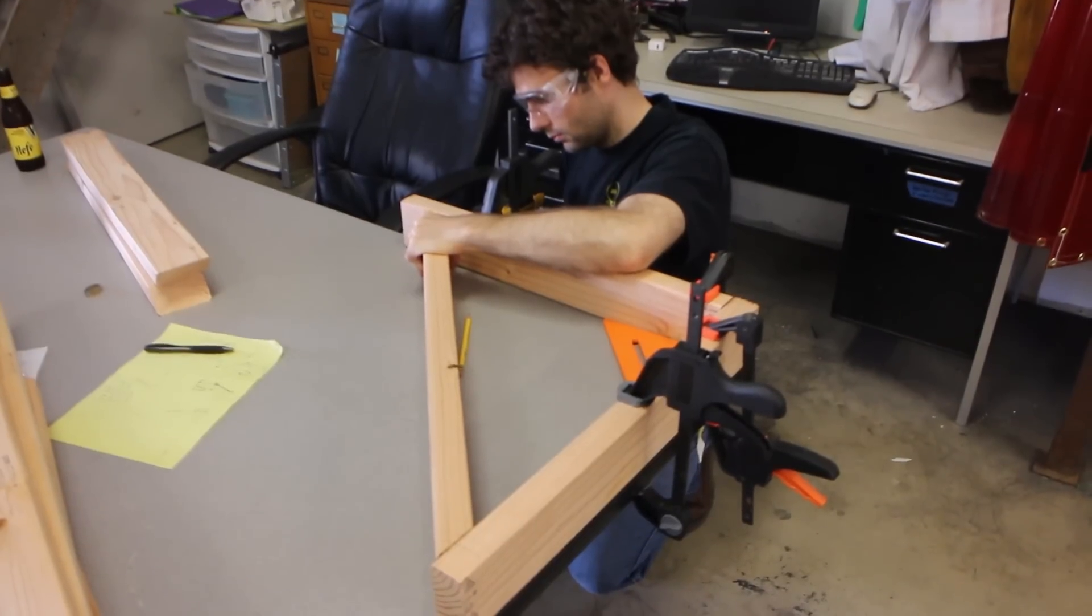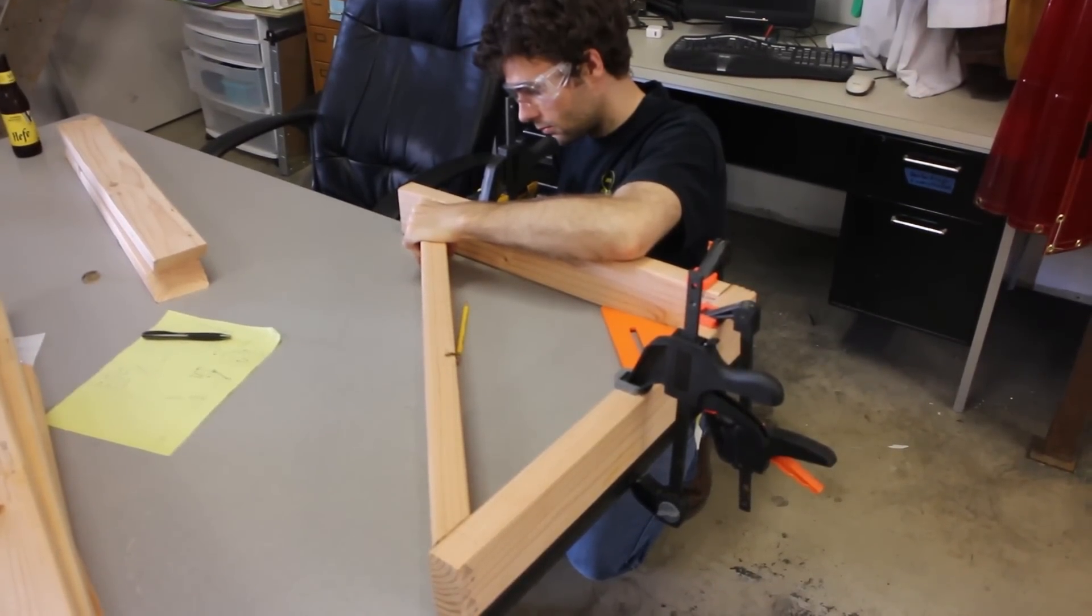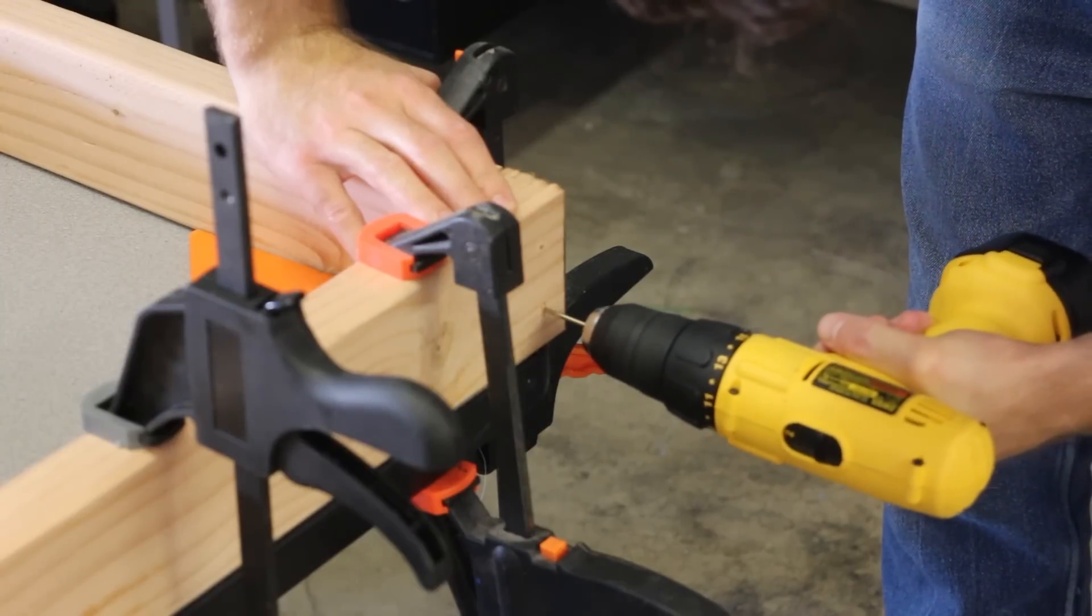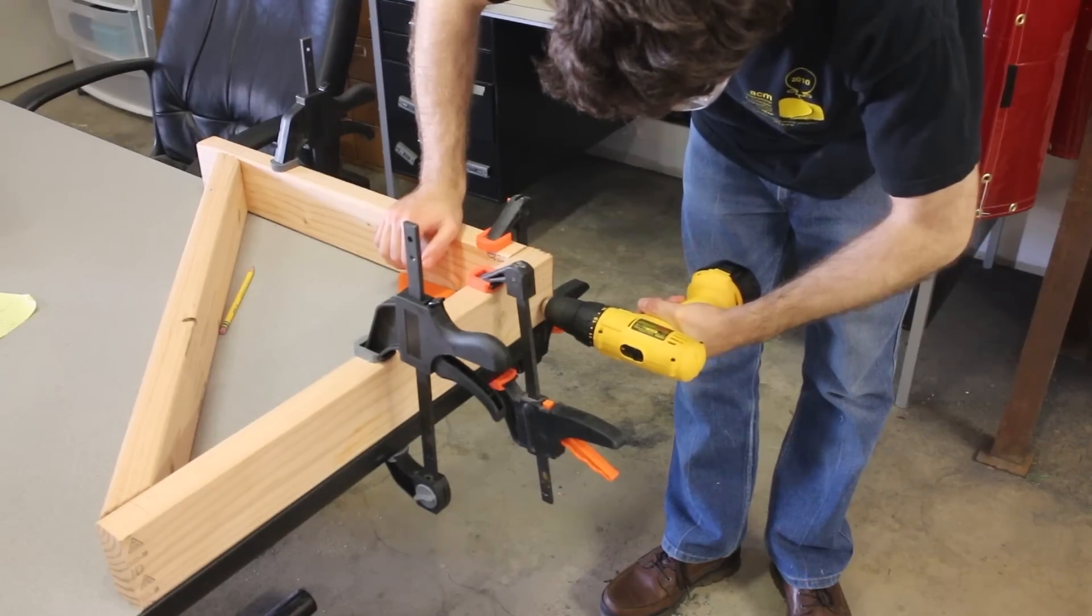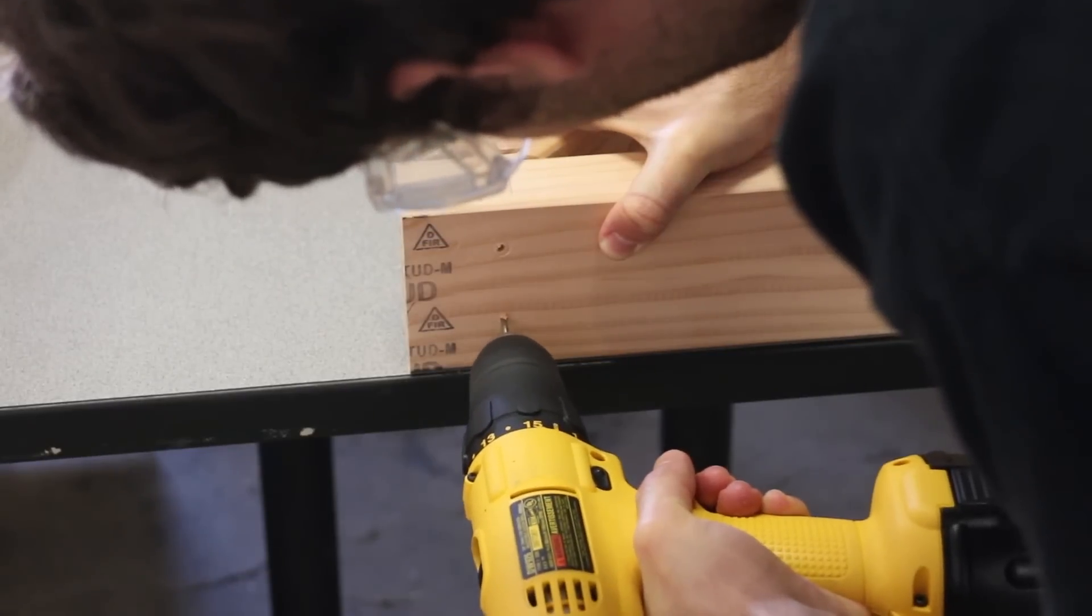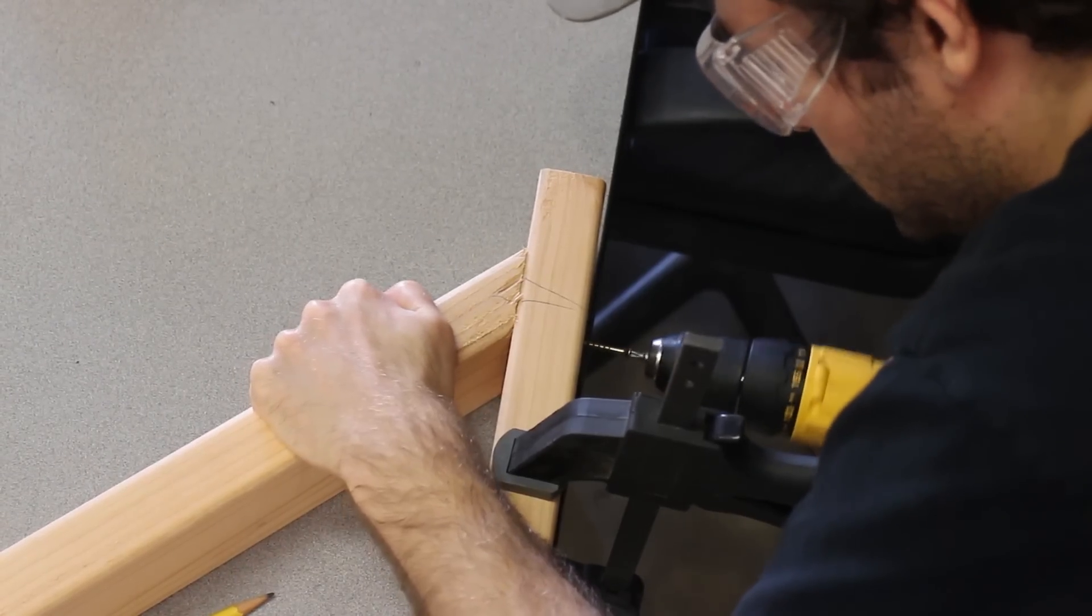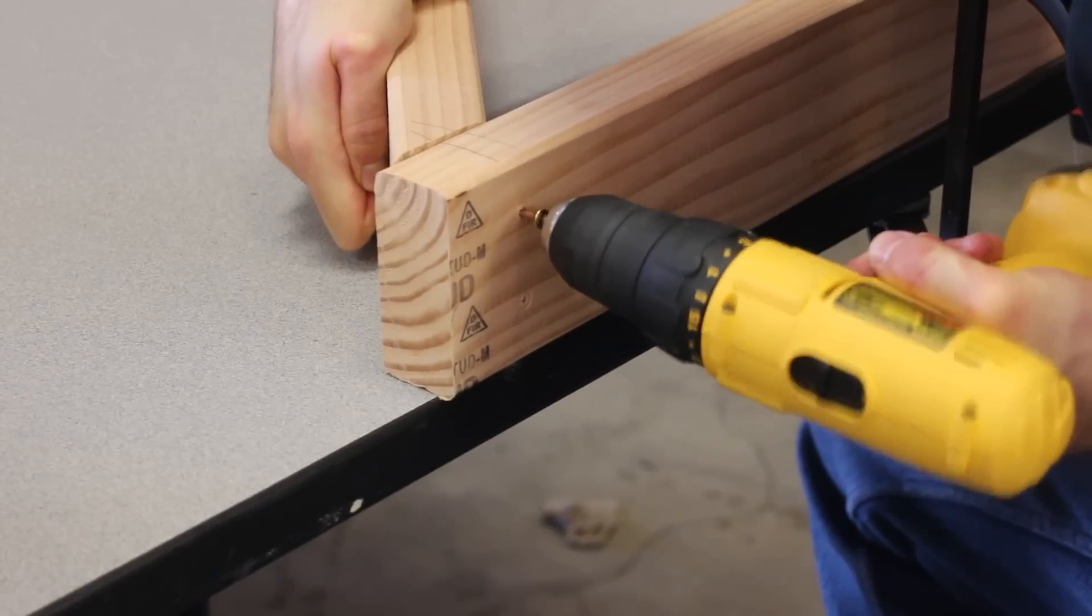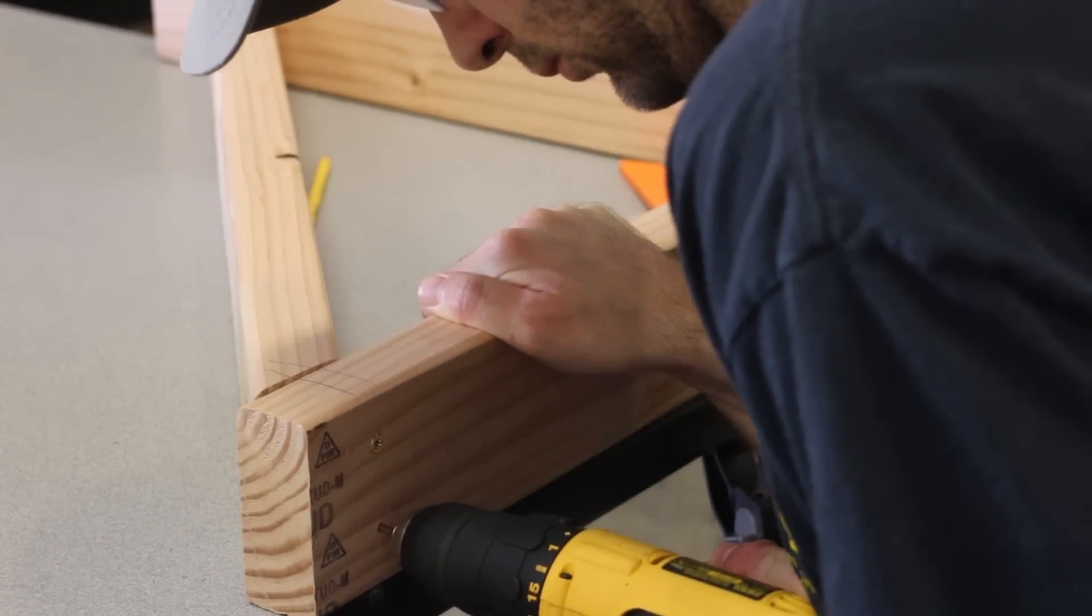Next we lined all the pieces up and clamped them to the table. Then we pre-drilled some holes and drove in some screws. These triangular pieces will all be identical and we'll just bolt them onto the main frame. This way we can easily break it down and transport it in our car.